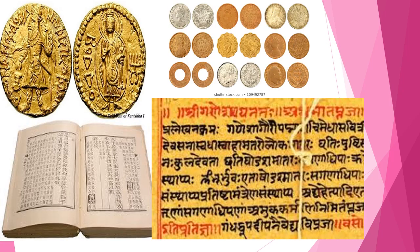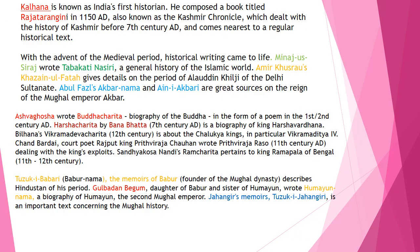Here we have examples of literary sources — books, coins, and writings on various materials. During the medieval period in India, so much was written, and the writers included Kalhana, Amir Khusro, Abul Fazl, Babur, and many more. On this slide you can have a good view of the writers and their creations — the literature during the medieval period.